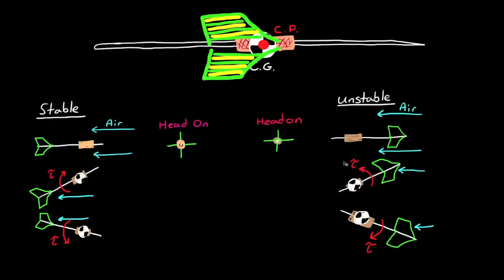For a dart, this is when the center of pressure and the center of gravity coincide. In this case, no aerodynamic torque is generated, regardless of the orientation of the dart relative to its flight path.